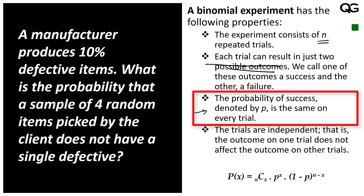The next property is that the probability of success is denoted by P and is the same in every trial. The probability of success here is 0.10 or 10%, because there are 10% defective items. Don't think of success as inherently good — success is simply what we are interested in. Here we are interested in defectives, so defective is considered success, and P = 0.10 is the same in each trial.